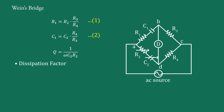And last, dissipation factor. It is defined for the series R1-C1 circuit as DF = ωC1·R1, or equivalently DF = 1/Q, meaning it is the reciprocal of Q. Therefore, from this equation, we can write dissipation factor = ωC2·R2. That's all. In the next video, we will cover Schering Bridge. Thank you.